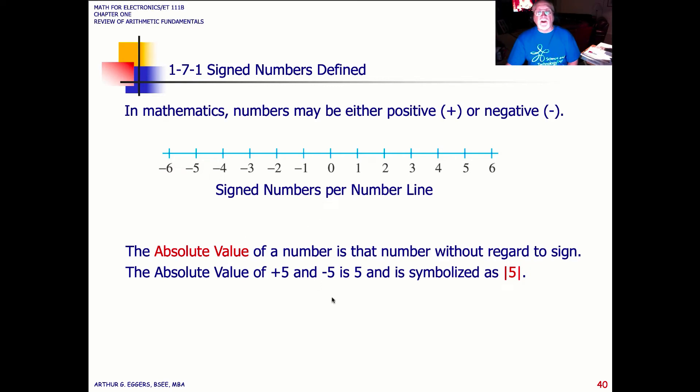The absolute value, very important, especially when you're dealing with values that you cannot have a negative number represented. You use, like you see here with the five, with the two bars on either side of it. It tells you that, regardless of the sign, your answer is going to be a positive number.